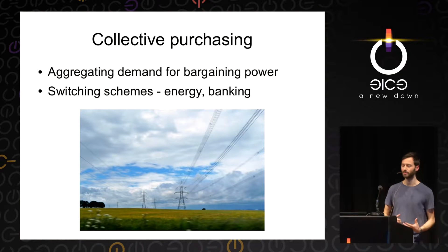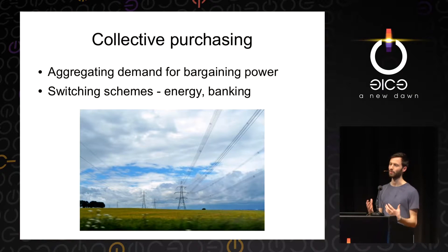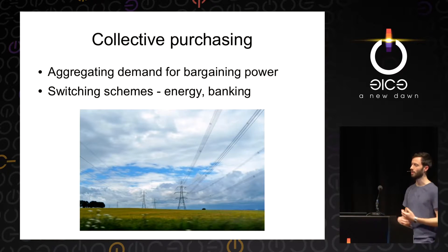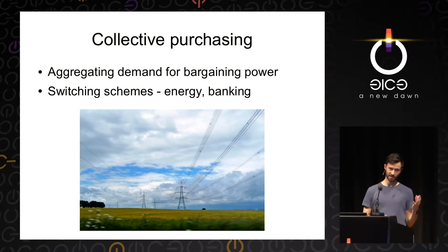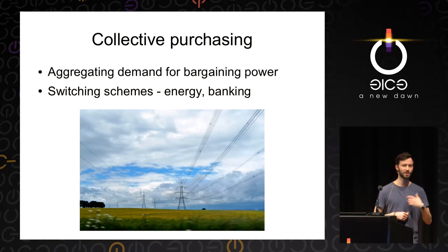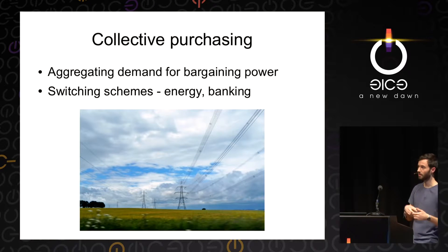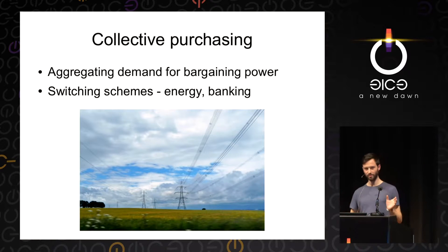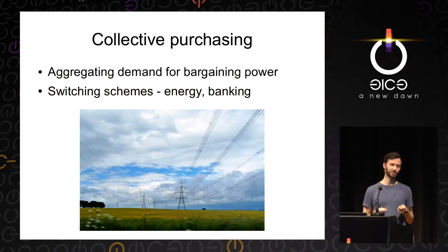But this still leaves the problem that as an individual, I don't have a great deal of power in the marketplace. What gives me more power is being aggregated with lots of other people — that's where collective purchasing comes in. By aggregating demand for a particular good, an intermediary can give consumers much more bargaining power with suppliers. This works particularly well in areas like energy, where switching schemes run by charities, local councils, or even churches help people switch to an energy provider offering a better service at a lower price.